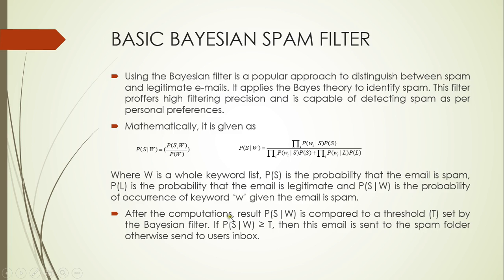After the computations, the result PS|W is compared to a threshold set by the Bayesian filter. If PS|W is greater than the threshold then the email is sent to the spam folder; otherwise it is sent to the user's inbox.